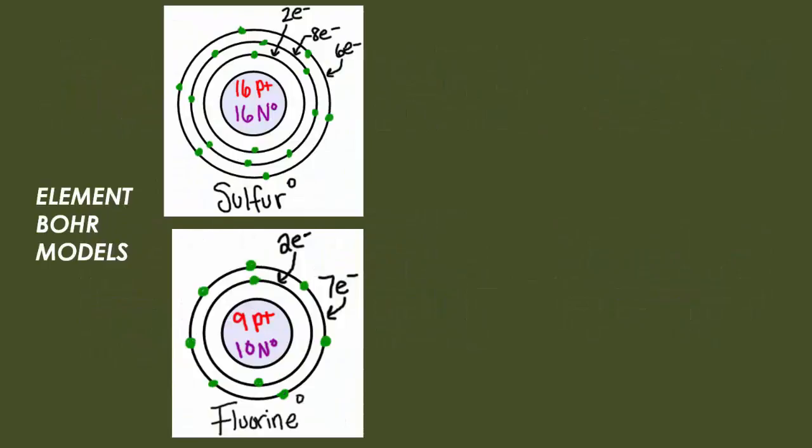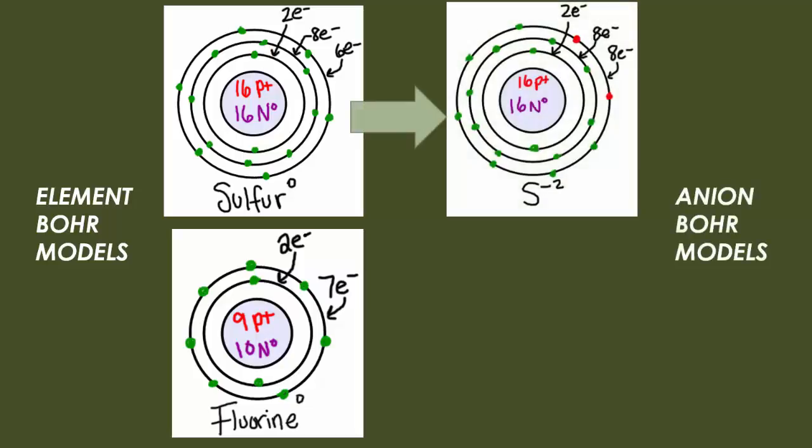So here we have two different nonmetals. We have sulfur and fluorine, both of these are anions. And sulfur, when you look at charge, the most common is negative 2. That means it's gaining two electrons in its outermost layer. So you're going from a configuration of 2, 8, 6, as we see in the element side, to a configuration of 2, 8, 8.